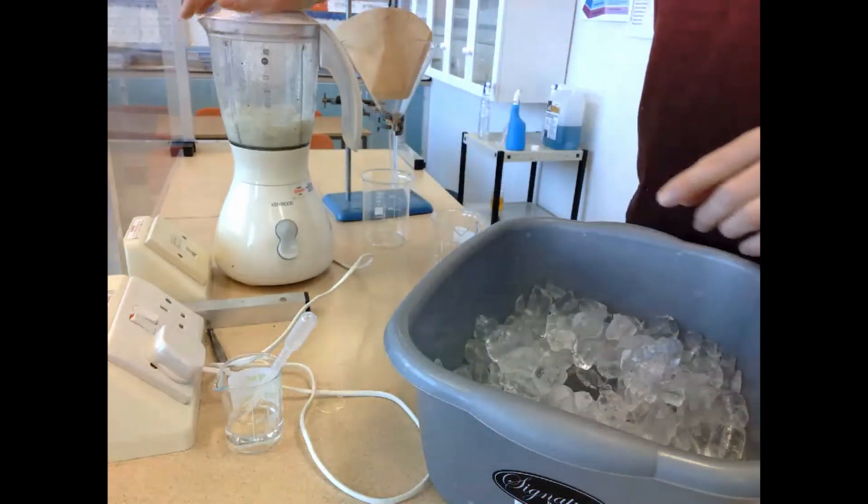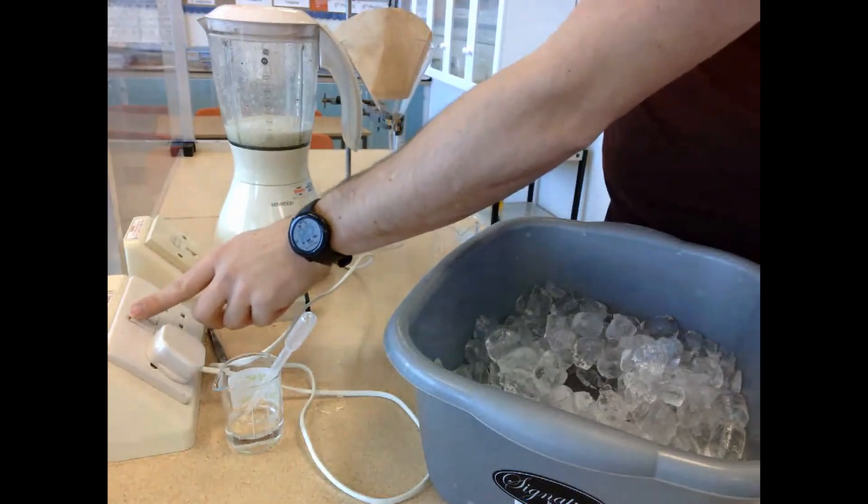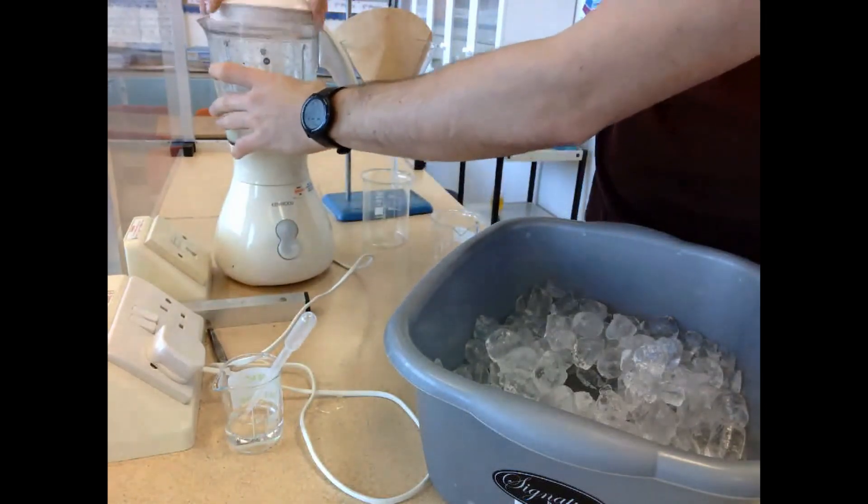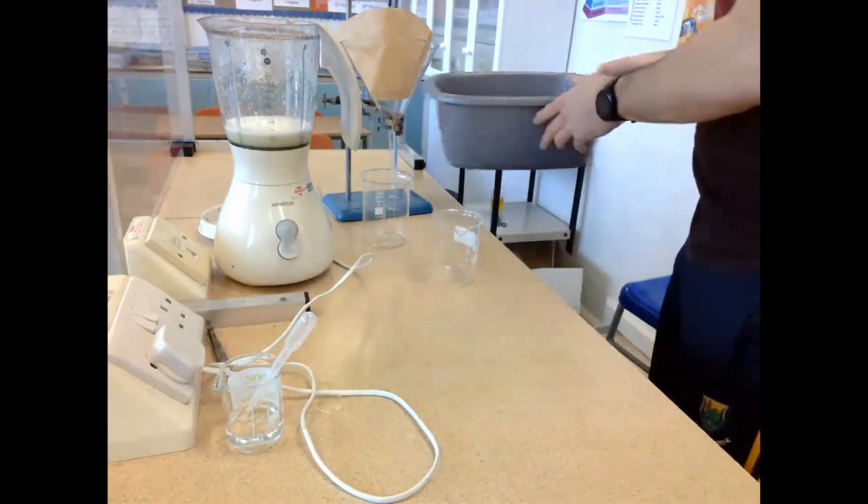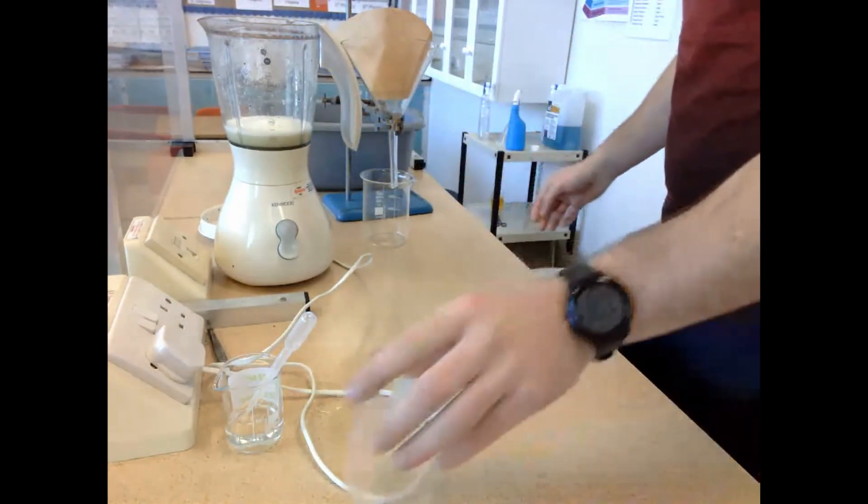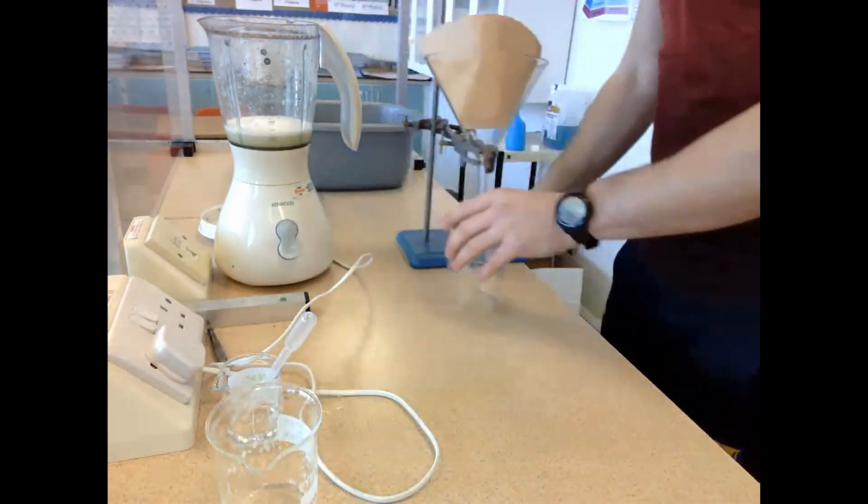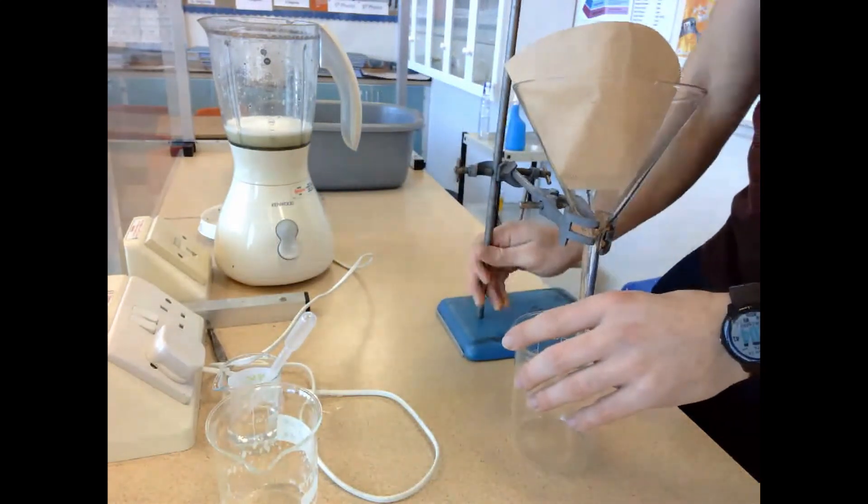And then we take it out and we begin to filter that solution. The reason we have to filter the solution is because we need to get rid of the cell debris. We don't want any of those big lumpy bits. We just want the filtrate because the filtrate is going to contain the DNA because it's really small so it can fit through the filter paper.